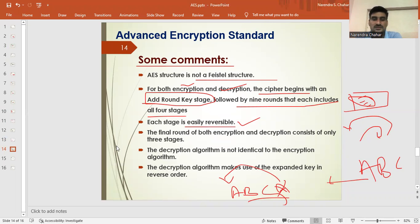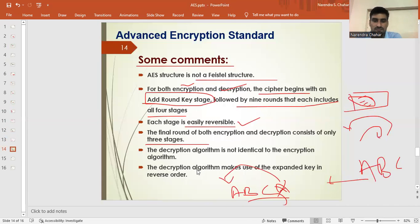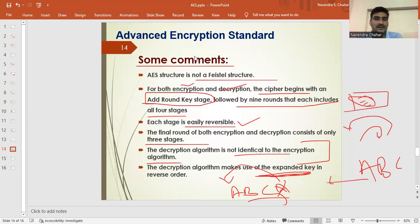The final round of both encryption and decryption consists of only three stages. Why not four? Just because we are not adding the round key here. The decryption algorithm is not identical to the encryption algorithm. The difference is here. We are not just doing the same procedure over again and again. We used an expanded key here to reverse the order. This is all about our encryption and advanced encryption standard. This is more advanced than the DES algorithm, which is not based on the Feistel structure. And each round has the four steps here.